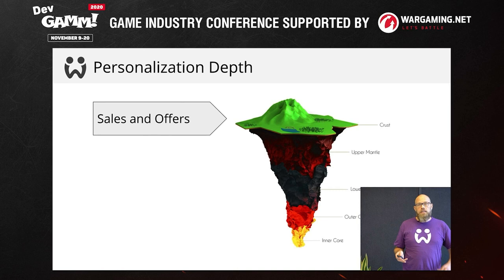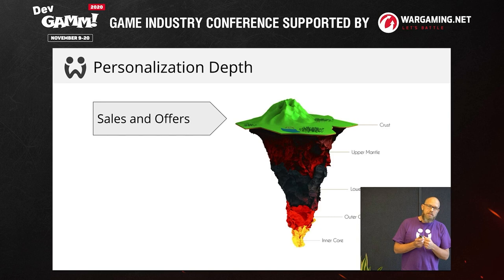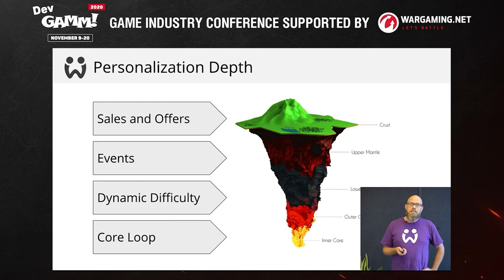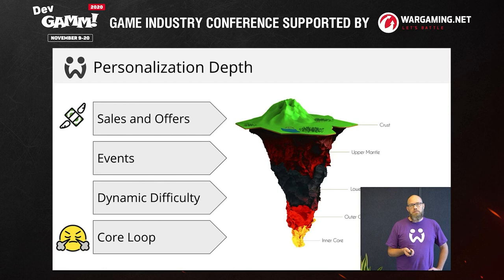So now we're getting to the actual navigation of this talk. We have just scratched the surface of personalization as an industry, and I would like to talk about all the different layers. We'll start with sales and offers, then talk about events, dynamic difficulty, and finally personalization in the core loop. These things get dramatically more difficult the deeper you go. Honestly, sales and offers is going to give you the biggest bang for the buck, so we probably won't spend that much time talking about it.